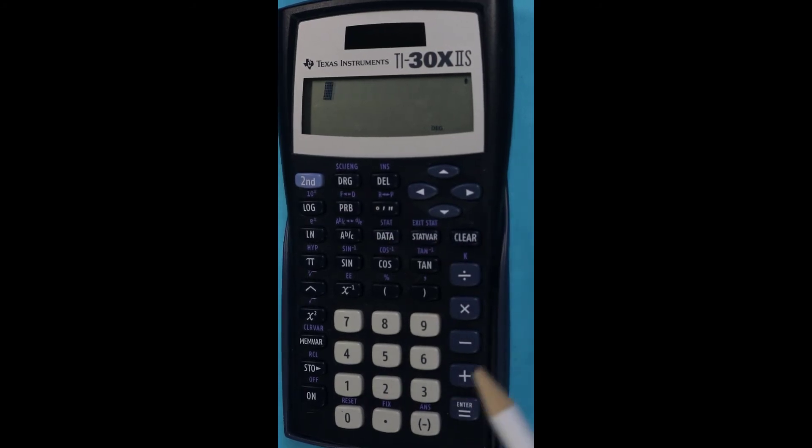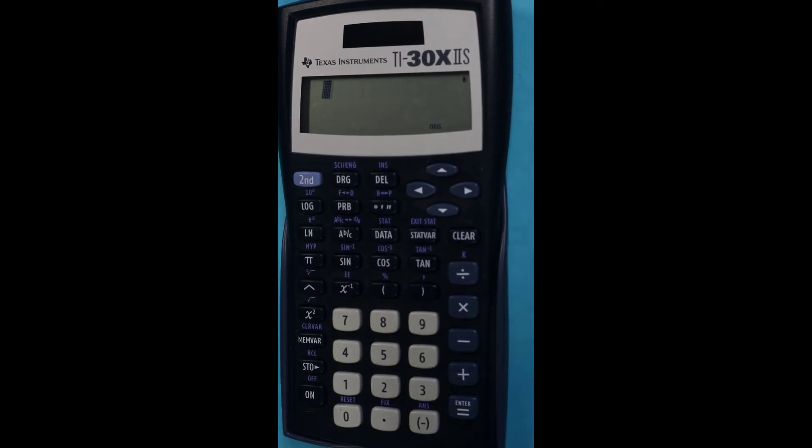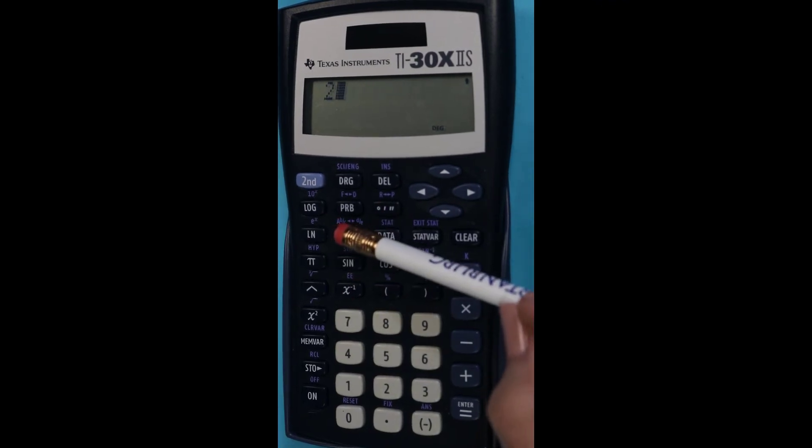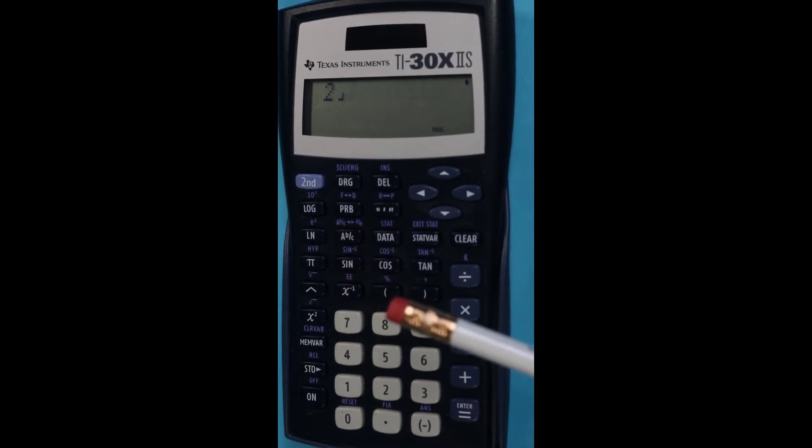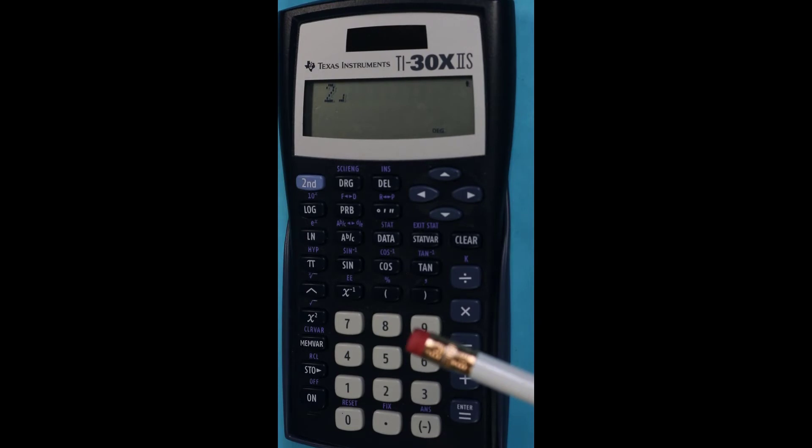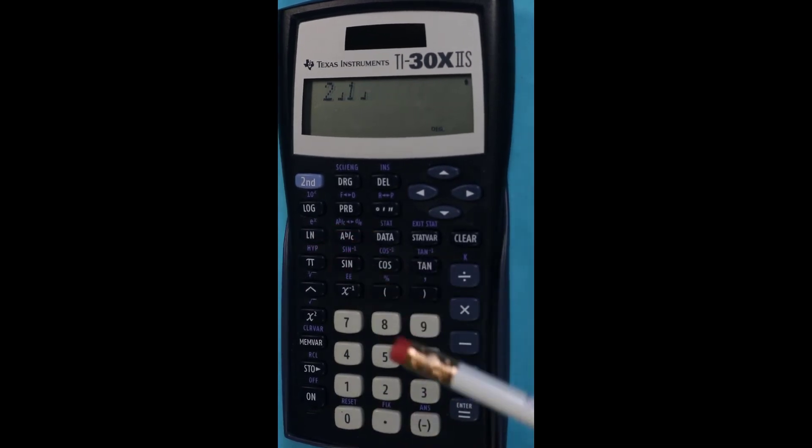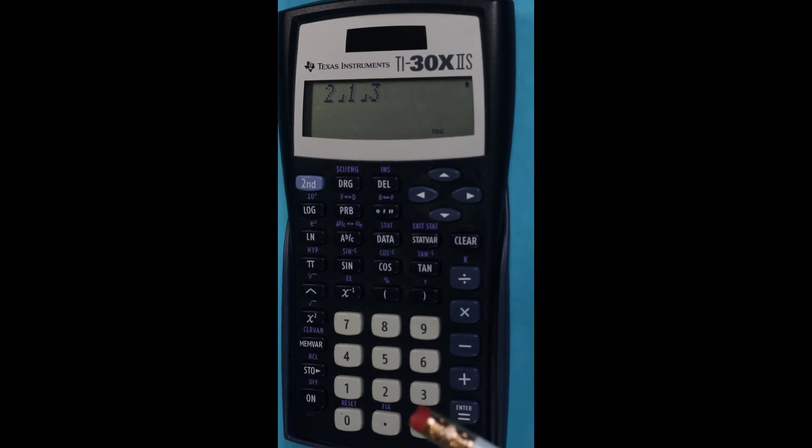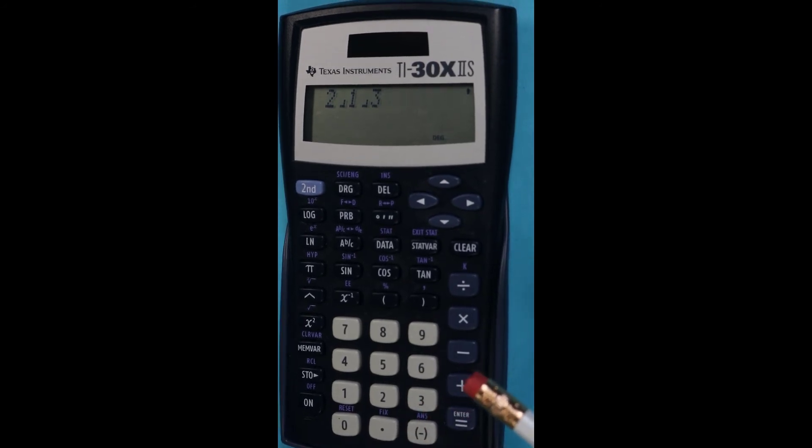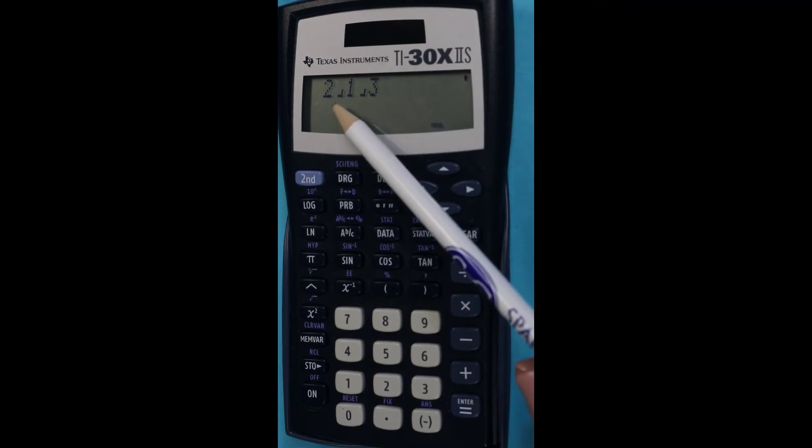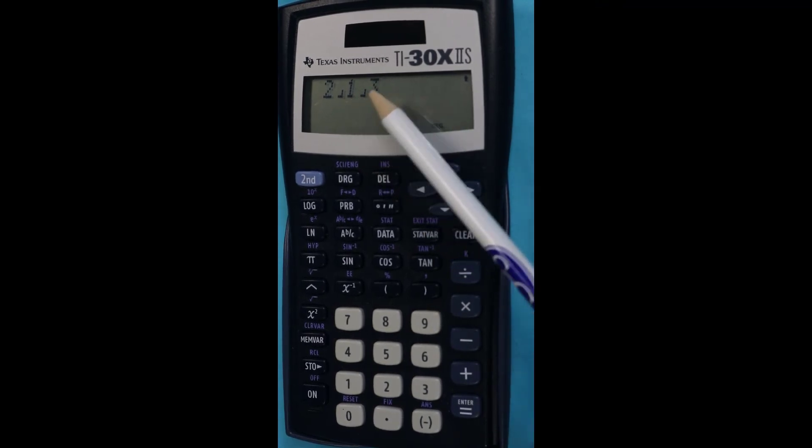So I'm going to take the mixed number 2 and 1/3 and show you how to type that. I'm going to press the 2, then we press the fraction key AB slash C, then the 1, then we hit the fraction key again, and then the 3. And so you now will see displayed something that looks like a 2 with a little backwards L, a 1 with a backwards L, and a 3.